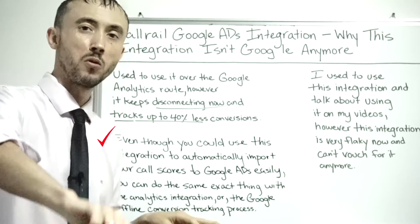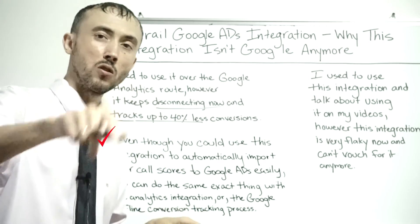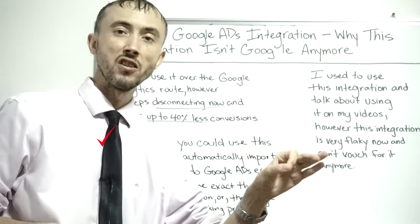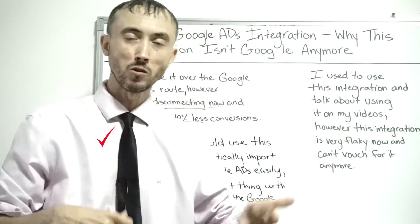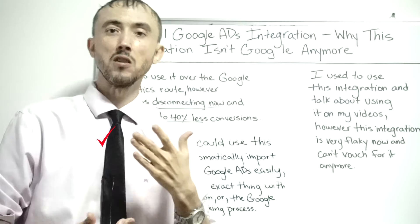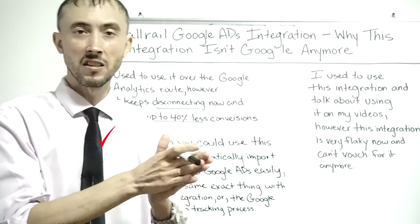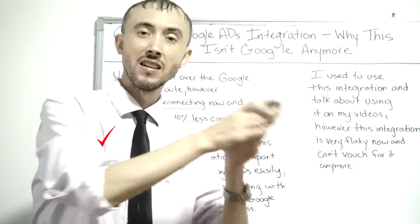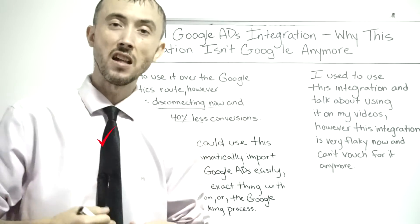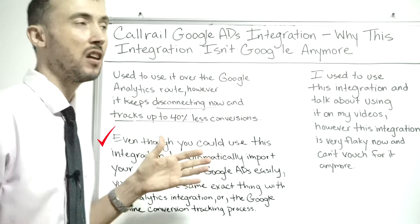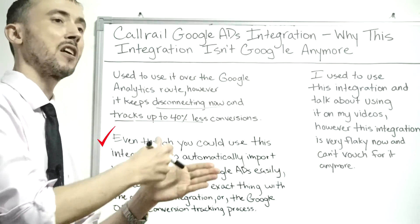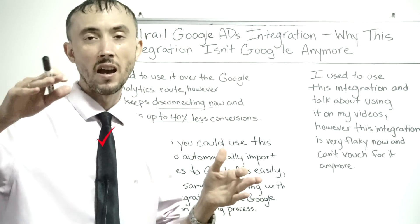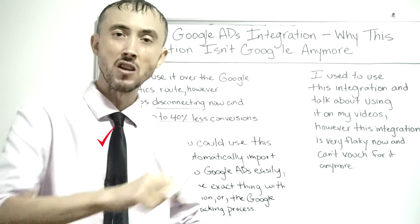Going back to the main topic: you can still import call scores into Google Ads — you just have to go through Google Analytics using the CallRail to Google Analytics integration, then pass that data from Google Analytics to Google Ads. Similarly, if you're using Conversion Intelligence — which scans calls for certain keywords and assigns values based on those keywords — you can send that data to Google Analytics and then to Google Ads, rather than using the direct CallRail to Google Ads integration.